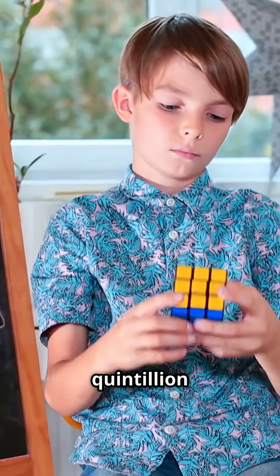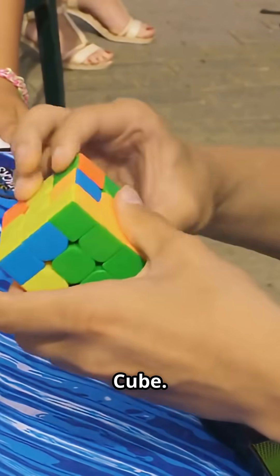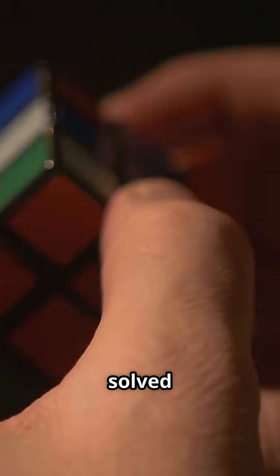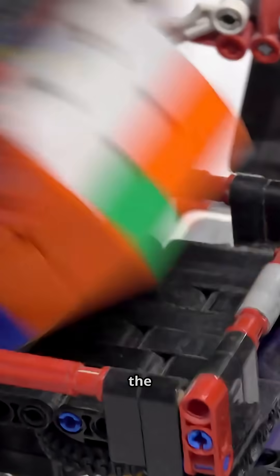There are 43 quintillion ways to scramble a Rubik's Cube. But here's the wild part. Every single one can be solved in 20 moves or less. Let's break down the math.